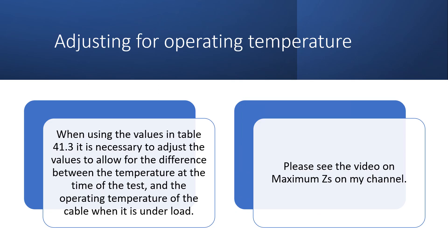The formula in appendix 3 shows that ZS max must be less than or equal to 0.8 multiplied by UO multiplied by C min, divided by IA. This basically multiplies the value from table 41.3 by 0.8, which reduces the value by 20% to allow for the difference in operating temperature. I explain this further in another video on my channel regarding maximum ZS, and I'll put a link at the top of the screen.